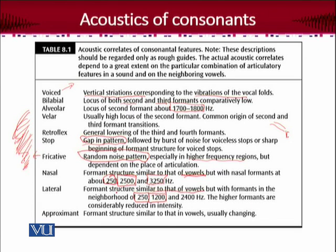So just remember that we would be collectively thinking about these features together. For an approximant, it is also similar to vowels, but the formants would be changing — there would be a glide visible in the formants. So these are some of the acoustic correlates for consonantal features.